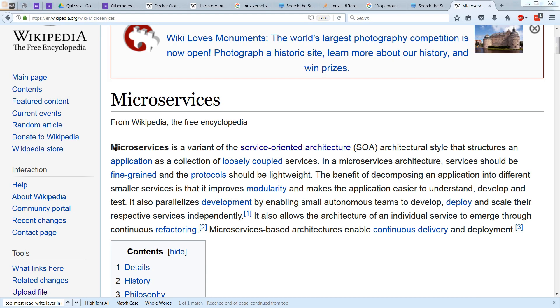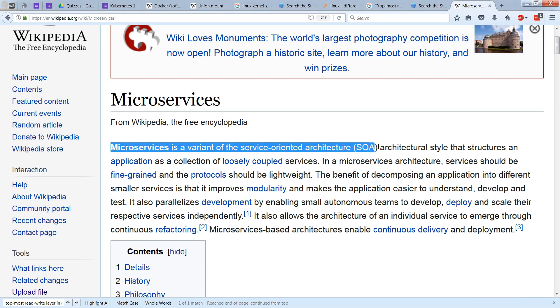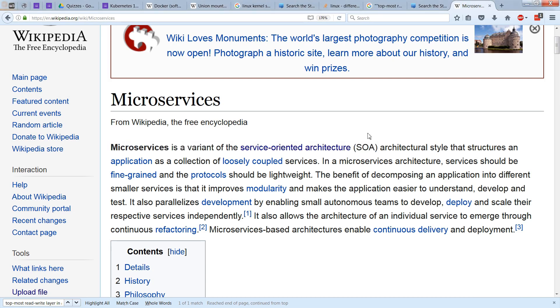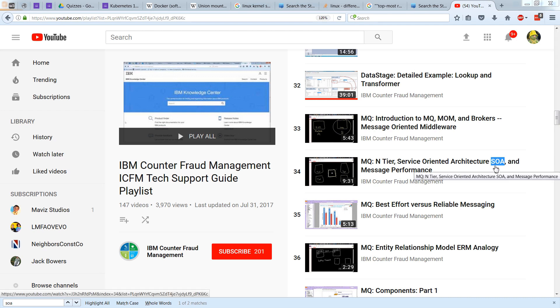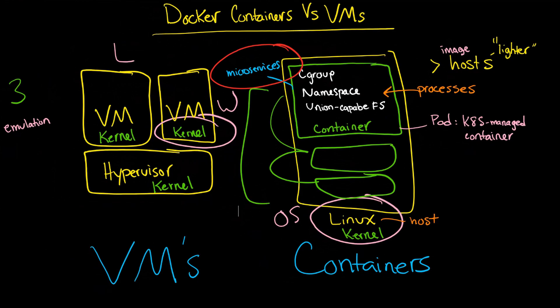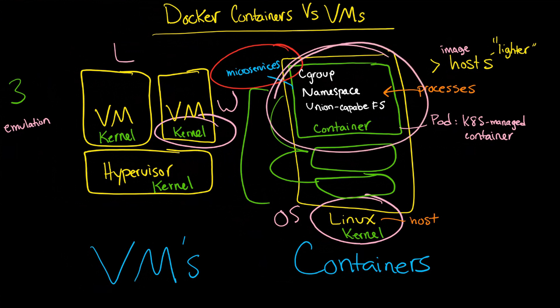Although more formally, microservices is really a variation of service-oriented architecture. Later, when we look at Kubernetes, you'll see that there's a concept called a pod. Having looked at this video, you'll know that a pod is actually a Kubernetes-managed container with its Cgroups, its namespaces, and UFS.